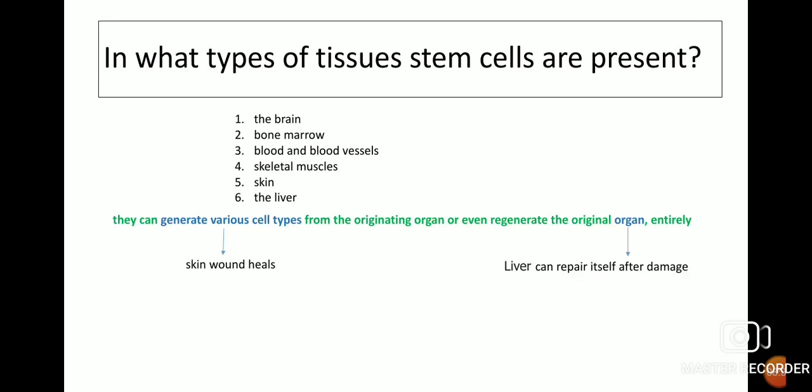Stem cells are present in the brain, bone marrow, bone and blood vessels, skeletal muscles, skin, and the liver. They can generate various cell types from the originating organ or even regenerate the original organ entirely. For example, the liver can repair itself after damage.